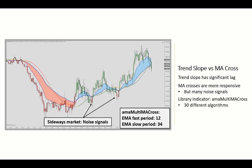Our moving average cross indicator does exactly this, plotting a fast versus a slow moving average, also allowing you to choose from a selection of more than 30 different algorithms for defining the trend as well as for determining support and resistance based on these moving average lines. What we see here is the standard EMA exponential moving average, and you see the trend is displayed as paint bars as well, also exposed in a public property data series for use in automated strategies as well as with other indicators.